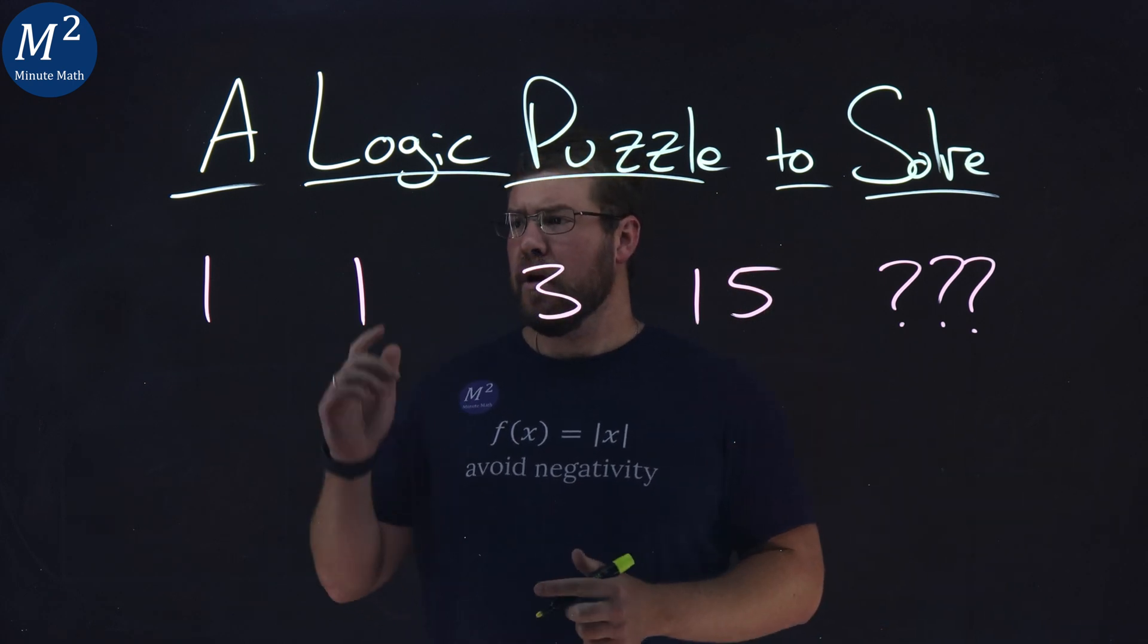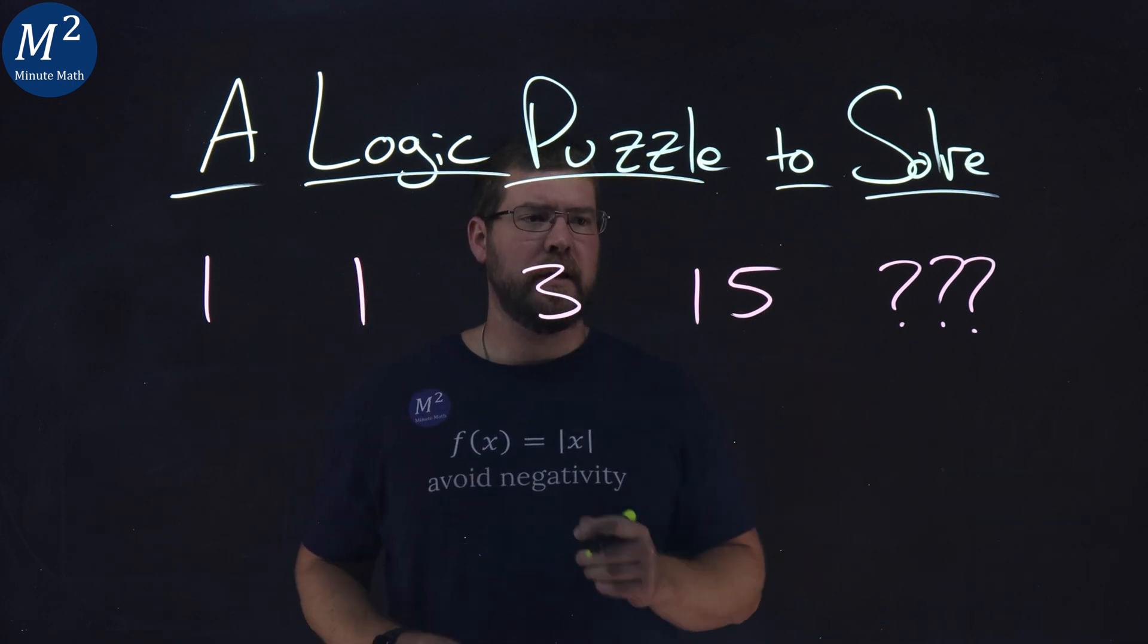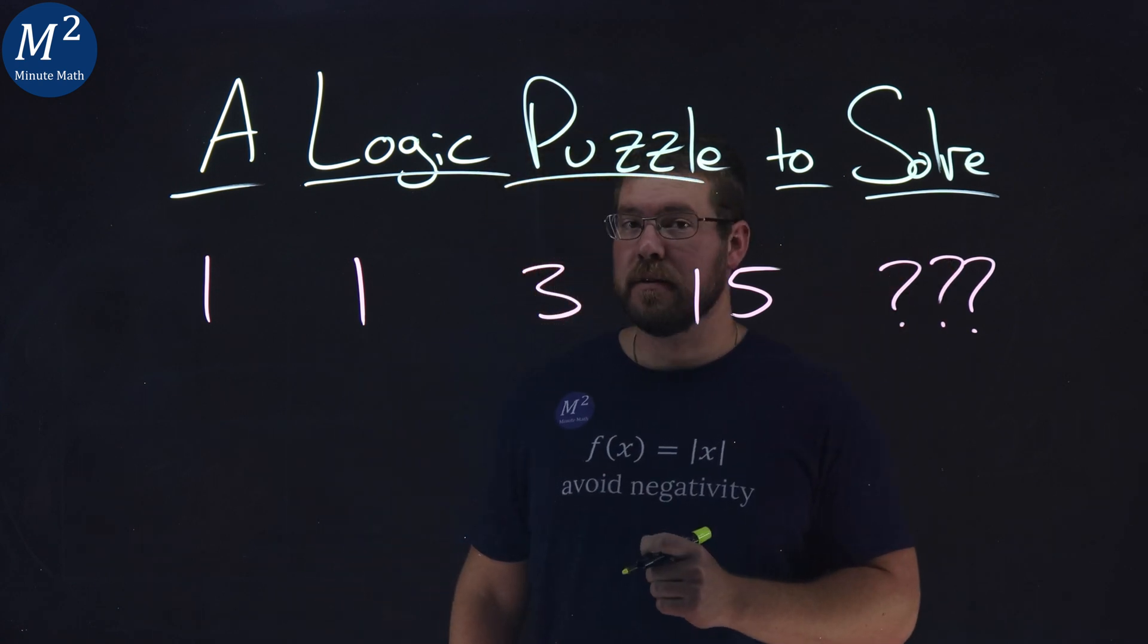The puzzle is this: 1, 1, 3, 15, what's the next number?